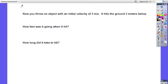Okay, now you throw an object with an initial velocity of 3 meters per second and it hits the ground 3 meters below. So it starts here and it's going to go up and it's going to come down and it's going to hit the ground 3 meters below. I'm going to let the initial height be 3 meters and the final height be 0, so that's the ground.